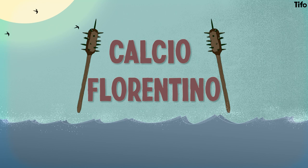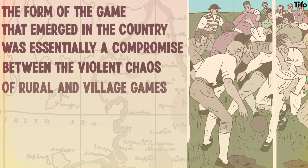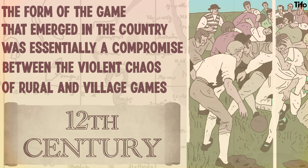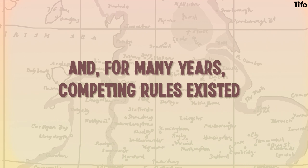Whether England is really football's home is questionable. Nevertheless, the form of the game that emerged in the country was essentially a compromise between the violent chaos of rural and village games, which date as far back as the 12th century, and the variations of the game which sprung up and were adapted in English public schools, such as Eton and Rugby. A codified version of the sport was always going to involve compromise, and for many years competing rules existed.